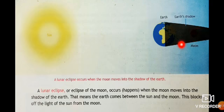This blocks off the light of the sun from the moon, called lunar eclipse. Lunar eclipse occurs when the moon moves into the shadow of the earth.